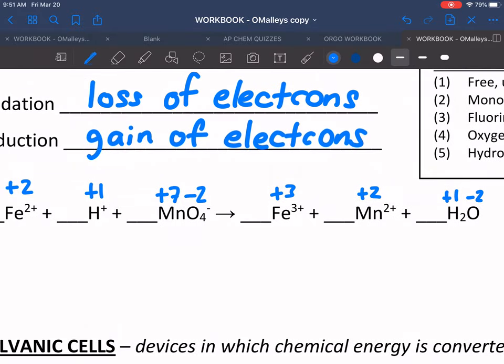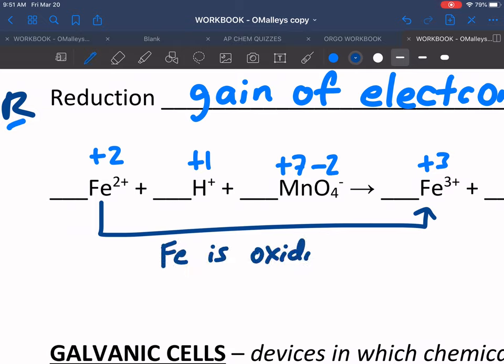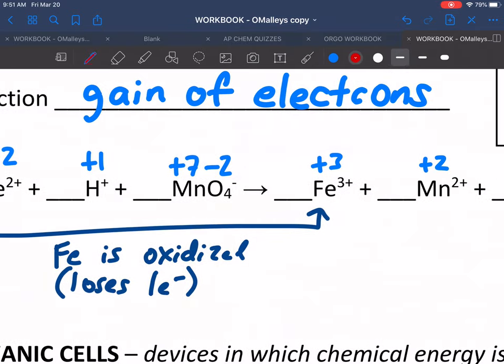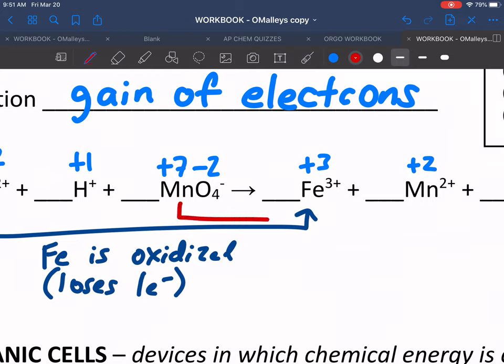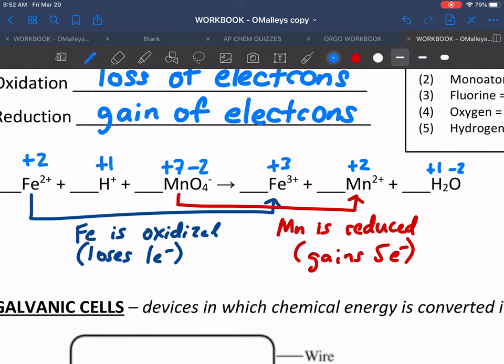Now to balance, we look at who changes. Well, iron changes. Iron goes from Fe2+ to Fe3+, so iron is oxidized. It loses one electron. Conversely, manganese is reduced. It gains five electrons. That's the first thing I do when I balance any of these types of redox reactions.